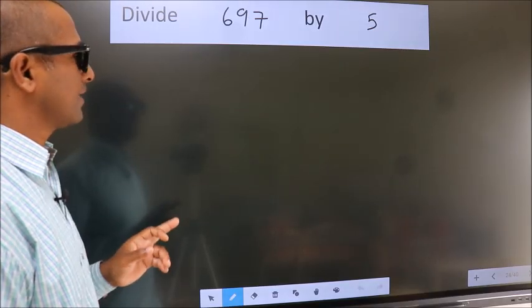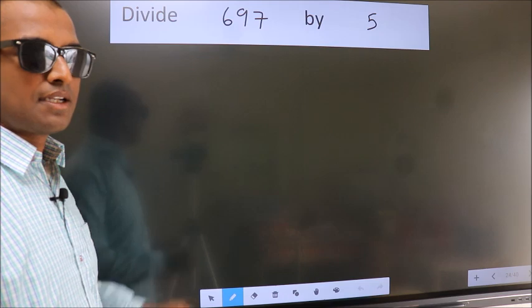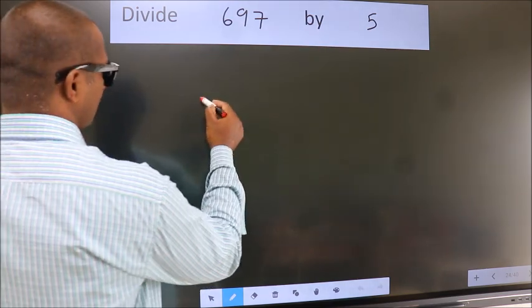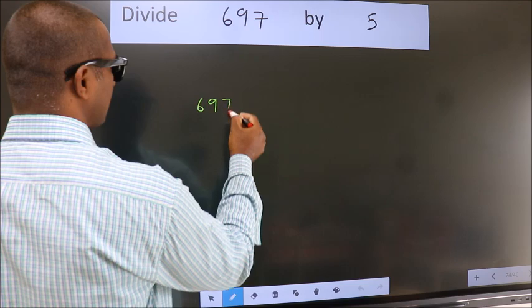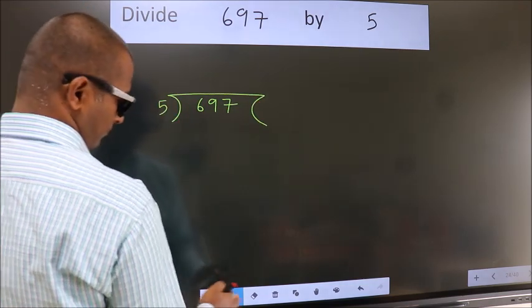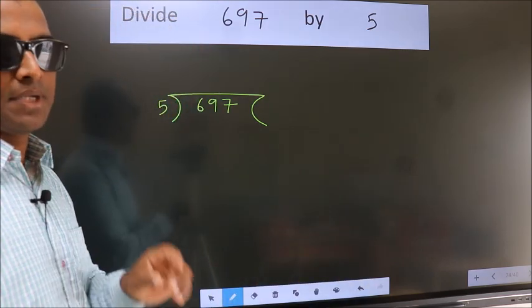Divide 697 by 5. To do this division, we should frame it in this way. 697 here, 5 here. This is your step 1.